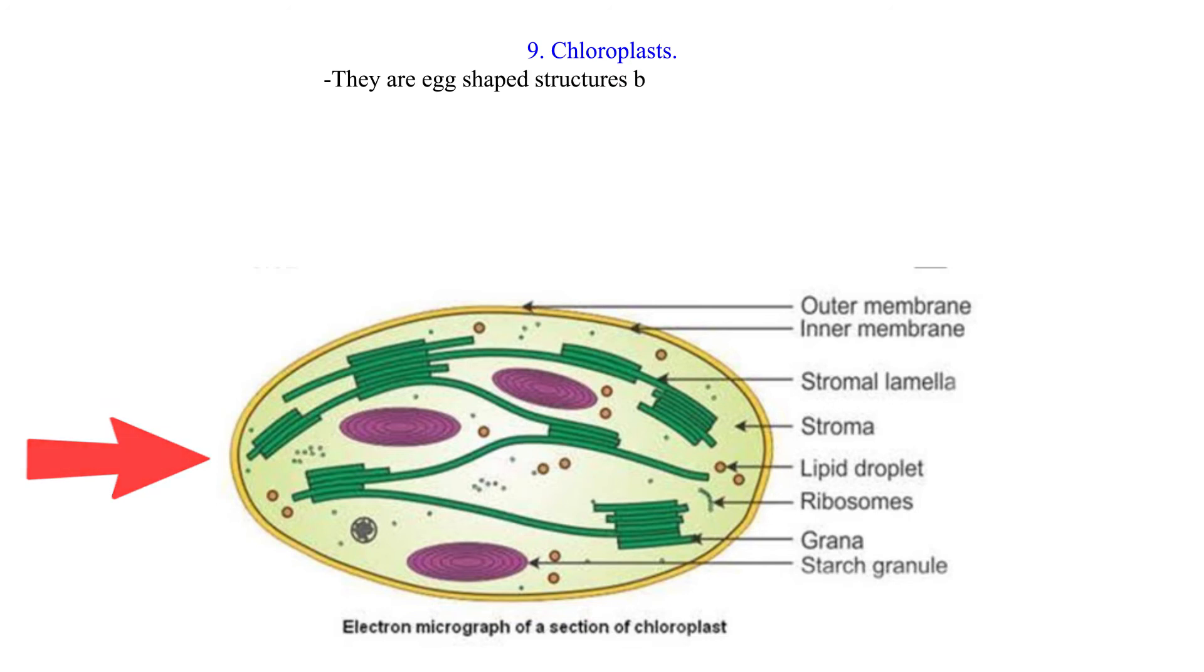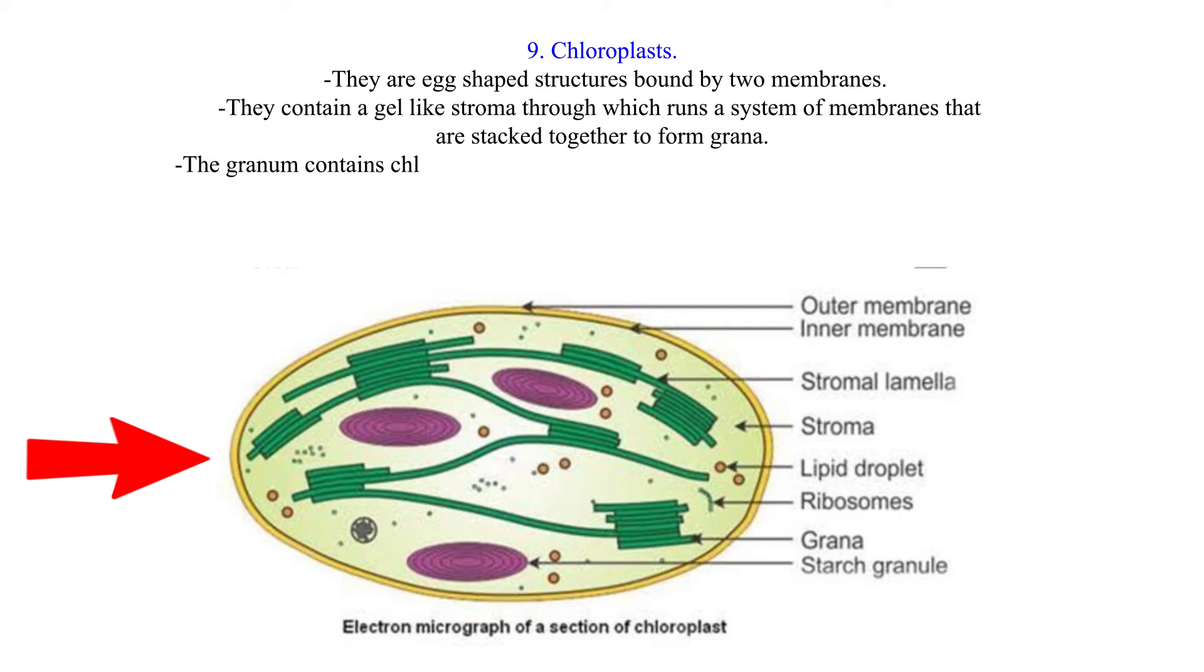9. Chloroplasts. They are egg-shaped structures bound by two membranes. They contain a gel-like stroma through which runs a system of membranes that are stacked together to form grana. The granum contains chlorophyll which traps light energy that is used in photosynthesis. Function of the chloroplasts: A. It is a site for photosynthesis.